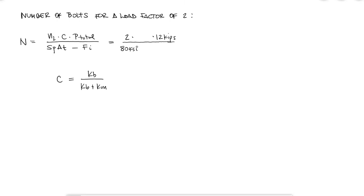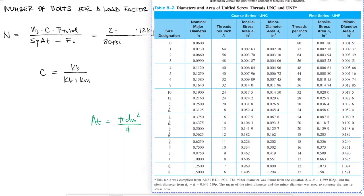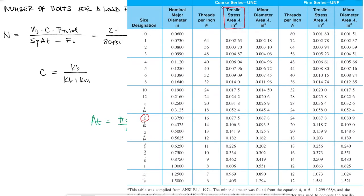The tensile stress area AT can be found if I look up the dimensions of the bolt. I know that AT is equal to pi D squared over 4 for a mean diameter between the root diameter and the pitch diameter. But since we've done that process before, I will use a table in a textbook that already gives me what the tensile stress area is for my 3/8 inch 16 bolt.